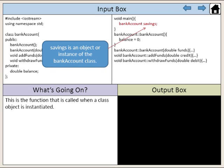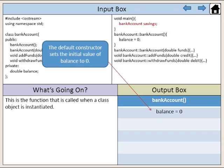In this example, savings is an object or instance of the bank account class. The default constructor sets the initial value of balance to zero.